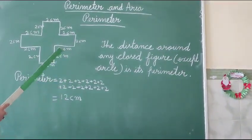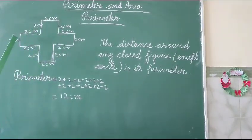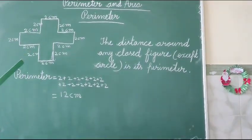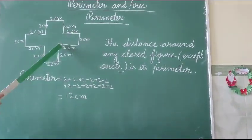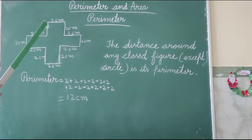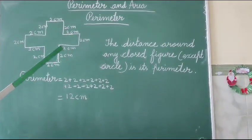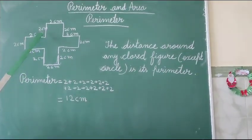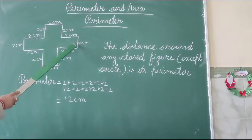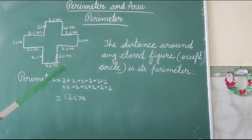So what is perimeter? Perimeter is a distance around any closed figure. See this figure I have made on the board. And I have written length of each side. See 12 sides are here. How many sides are here? 12 sides. So if you are asked to find the perimeter of this figure, what will you do? You have to add all the sides. Length of all the sides you will add, and then you can take out the perimeter.